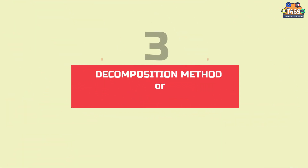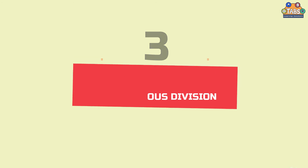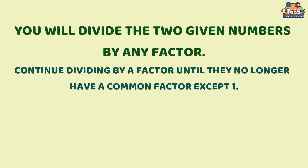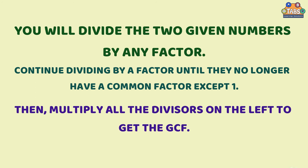Let us try the third method, which is through the decomposition method or continuous division. In the decomposition method, you will divide the two given numbers by a factor. Continue dividing by a factor until they no longer have a common factor except 1. Then, multiply all the divisors on the left to get the greatest common factor.